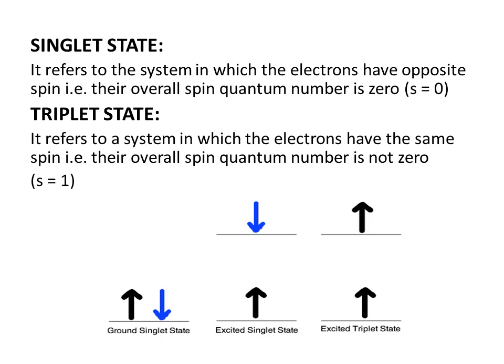To know the reason behind these phenomena, you need to watch this video. Fluorescence and phosphorescence are behind these phenomena. To understand them, let's cover some terminology. Singlet state refers to a system in which the electrons have opposite spin. For example, two electrons with opposite spins have an overall spin quantum number of zero.